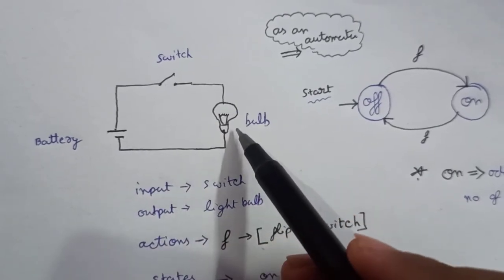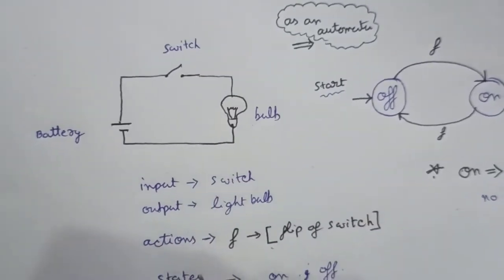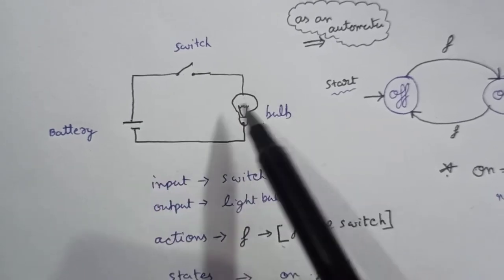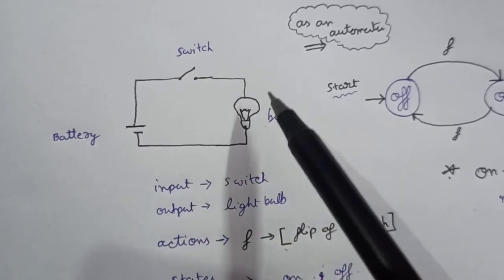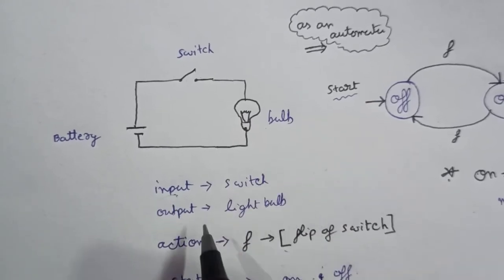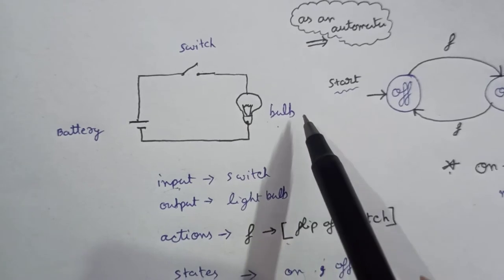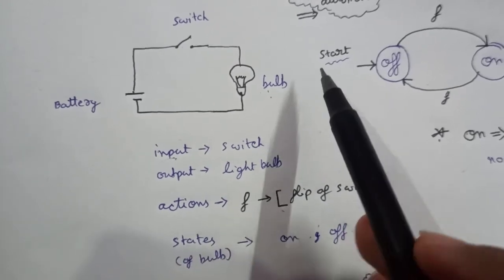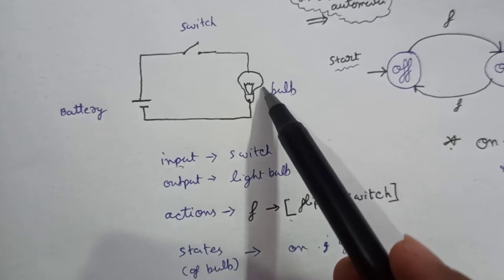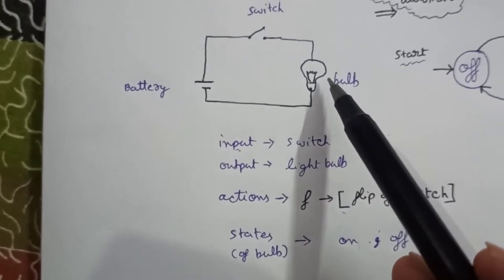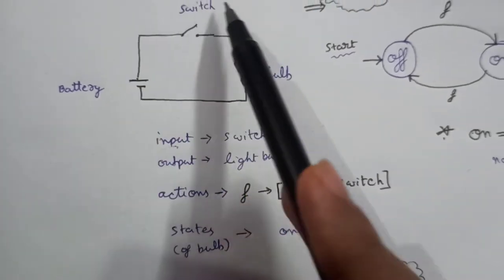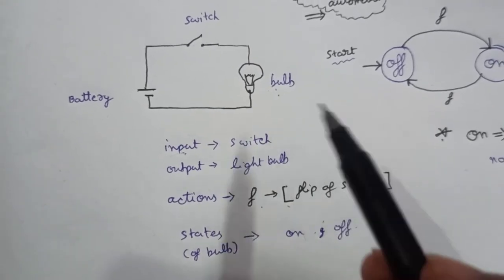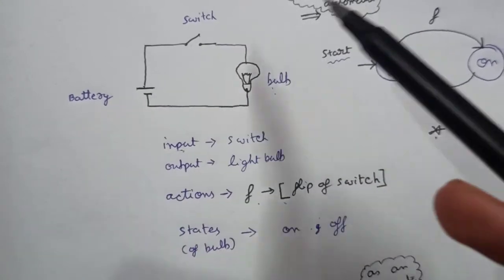If we think of this as a computer, we can give input only to the switch. So the input is the switch and the output is the light bulb — either the light bulb is on or off. The states of the bulb are on or off, and we need to determine from which actions we can make the states switch from on to off.